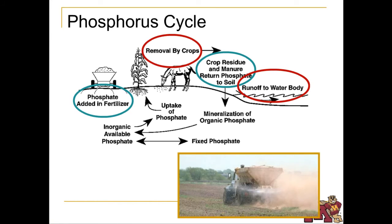The phosphorus cycle is a little more simple. It's added to the soil from fertilizer, manure, or crop residue. Phosphorus is removed from the soil by plant use and harvesting. It sticks easily to soil and moves with it when erosion occurs.